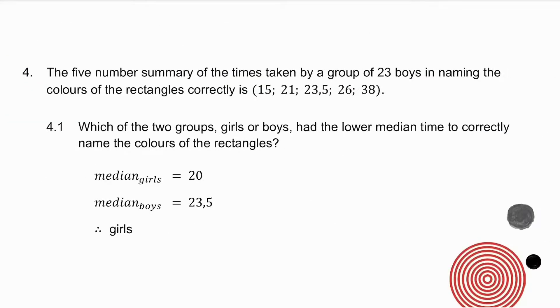Question 4 gives you data for 23 boys. So it gives you a 5 number summary for 23 boys. And it says to you which of the 2 groups had the lower median time. Now I've already worked out the median of the girls. The middle number here is the median of the boys. So which one had the lower median? It is the girls.